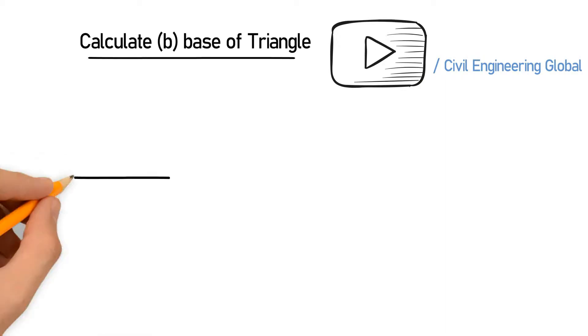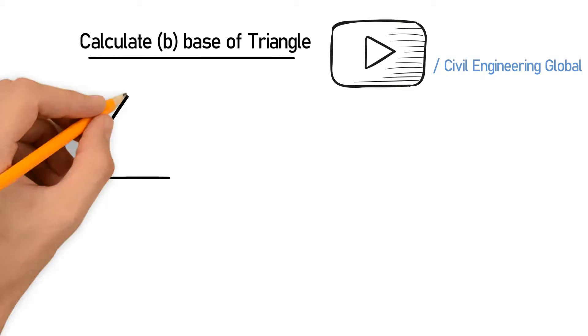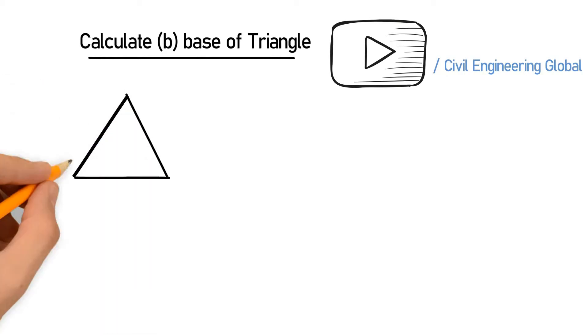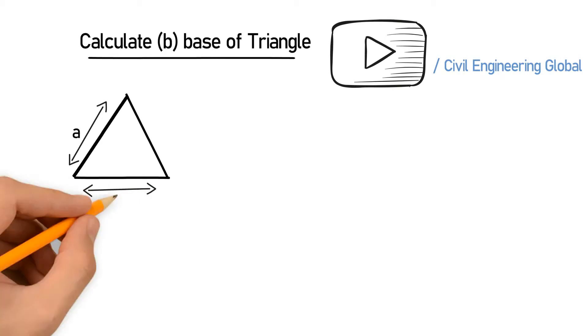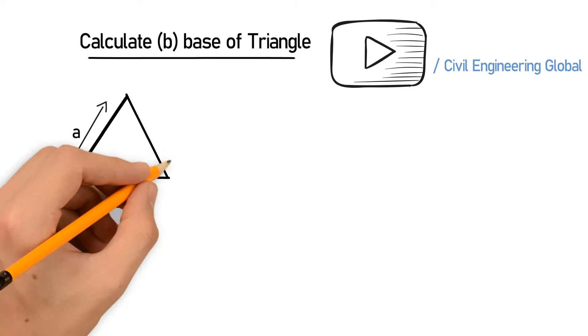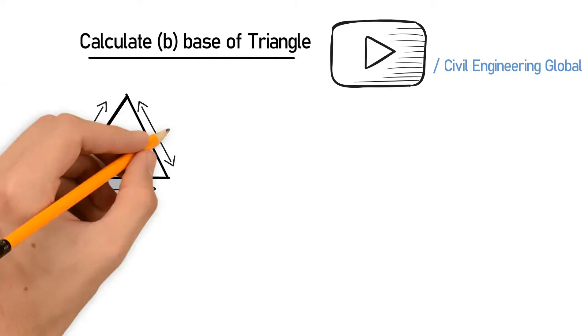So let's draw the triangle first. This side is the A. This portion is B and this distance is C.